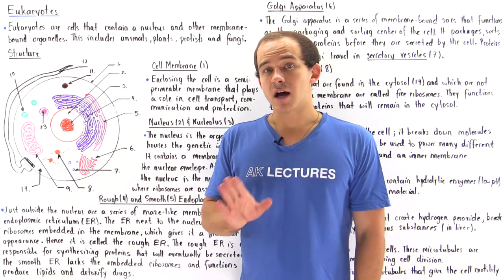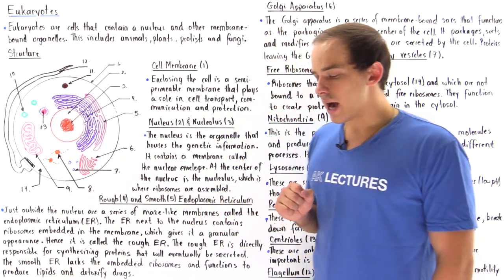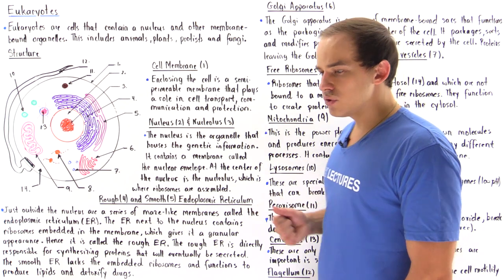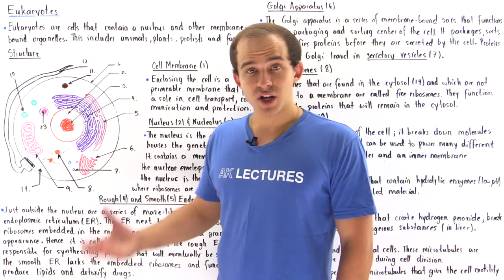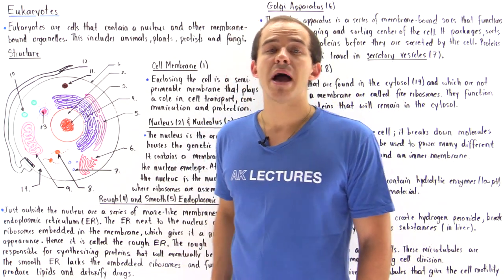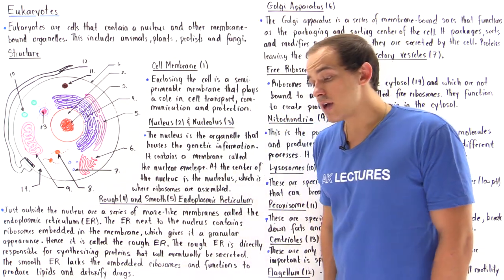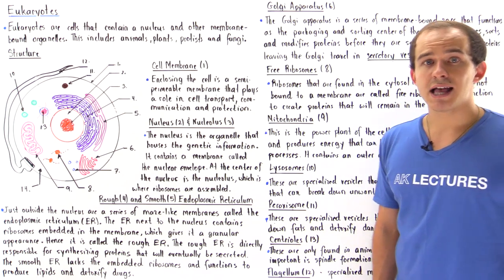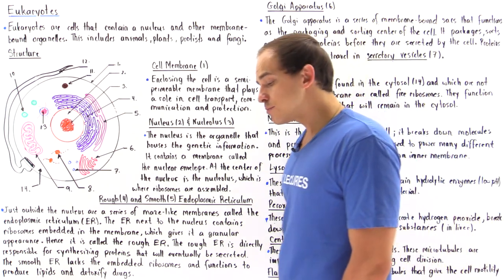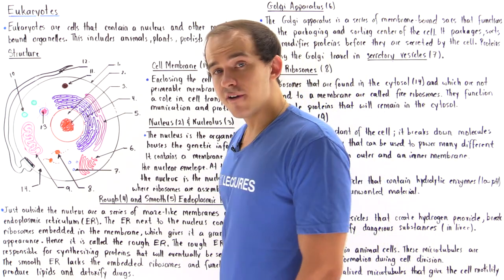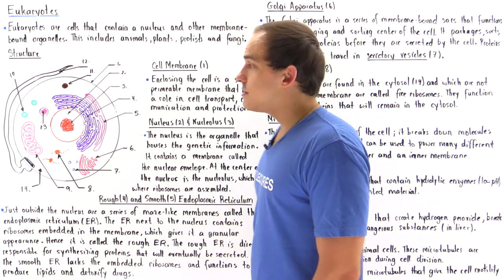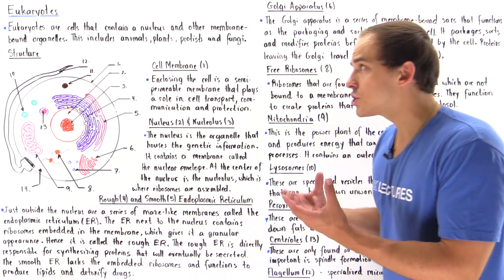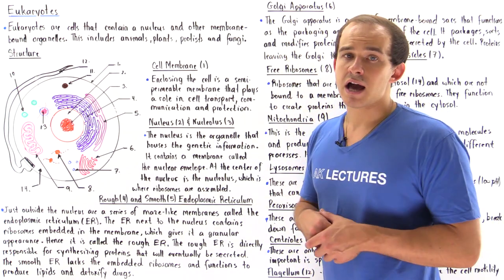Eukaryotic cells, unlike prokaryotic cells, are those cells that contain a nucleus as well as other membrane-bound organelles. Eukaryotic cells include animal cells and plant cells, as well as protists and fungi. In this lecture, we're going to focus on the structure of the eukaryotic cell.